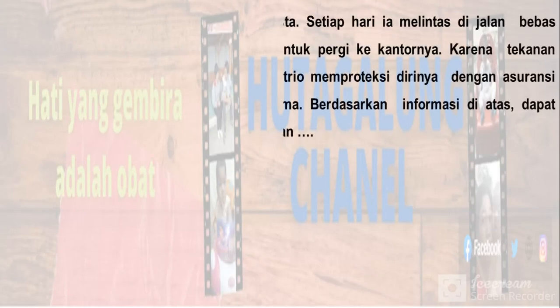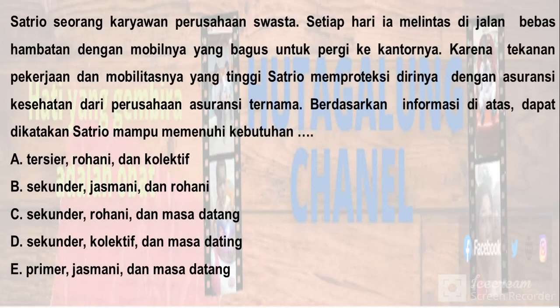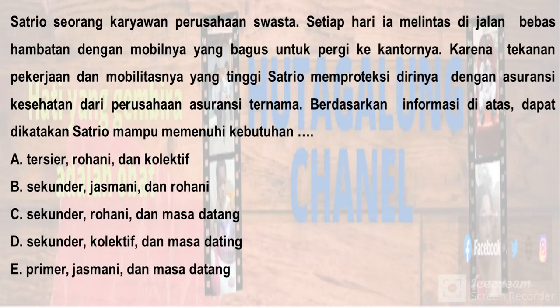Kita lanjut selanjutnya. Satrio, seorang karyawan perusahaan swasta. Setiap hari ia melintas di jalan bebas hambatan dengan mobilnya yang bagus untuk pergi ke kantornya. Karena tekanan pekerjaan dan mobilitasnya yang tinggi, Satrio memproteksi dirinya dengan asuransi kesehatan dari perusahaan asuransi ternama. Berdasarkan informasi di atas, dapat dikatakan Satrio mampu memenuhi kebutuhan... A. Tersier, rohani dan kolektif. B. Sekunder, jasmani dan rohani. C. Sekunder, rohani dan masa datang. D. Sekunder, kolektif dan masa datang. E. Primer, jasmani dan masa datang.